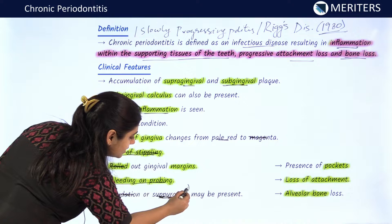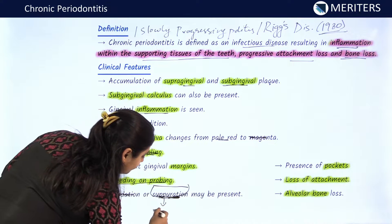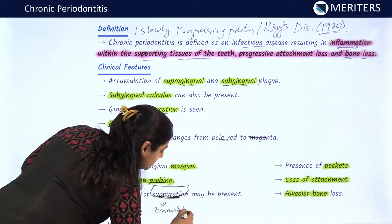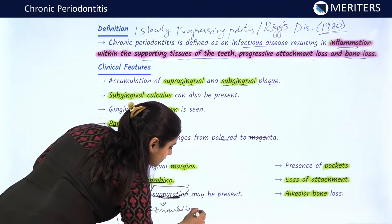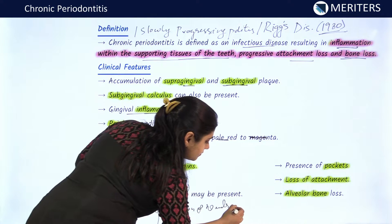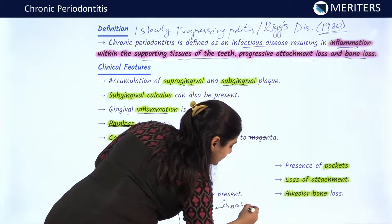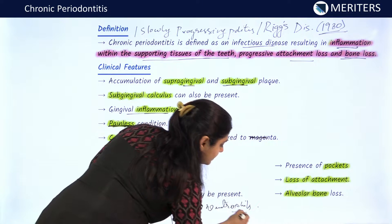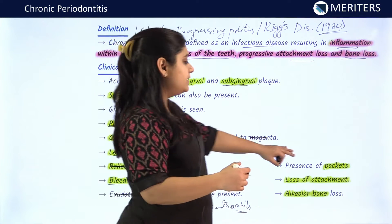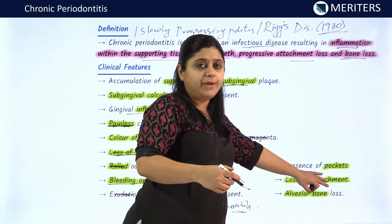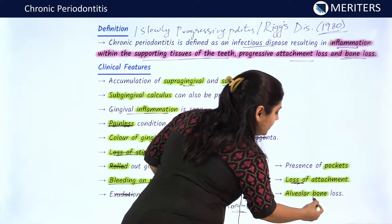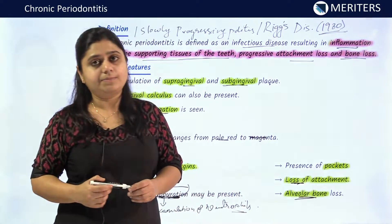This suppuration consists of accumulation of neutrophils, which are the primary cells to come at the site of inflammation. Apart from this, there is presence of deep periodontal pockets, loss of attachment, and alveolar bone loss.